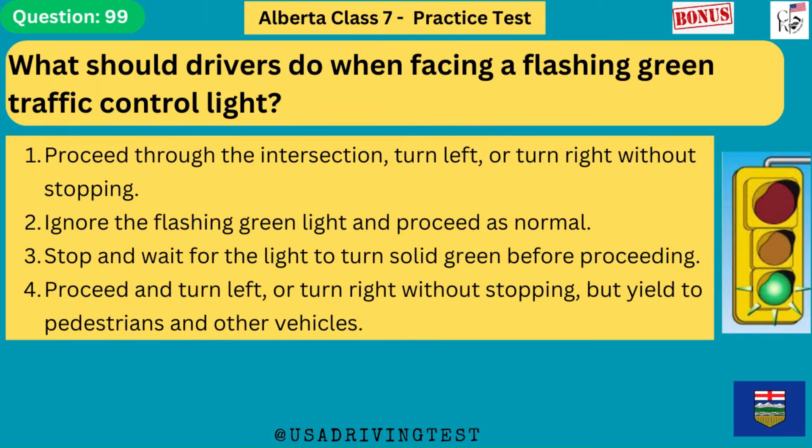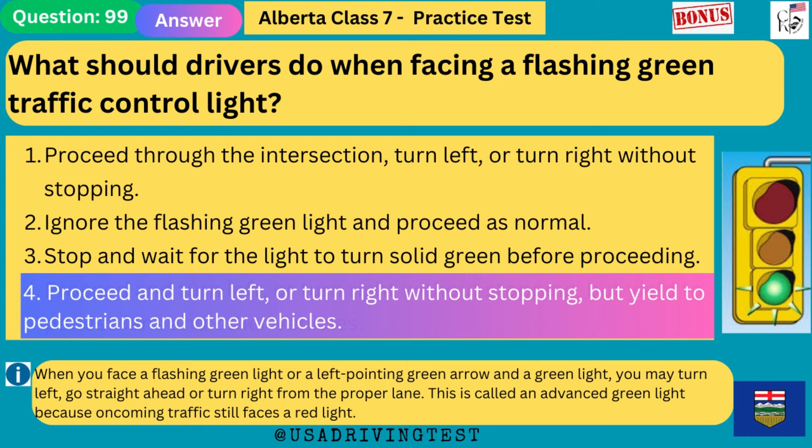What should drivers do when facing a flashing green traffic control light? 1. Proceed through the intersection, turn left, or turn right without stopping. 2. Ignore the flashing green light and proceed as normal. 3. Stop and wait for the light to turn solid green before proceeding. 4. Proceed and turn left or turn right without stopping, but yield to pedestrians and other vehicles. The answer is 4. When you face a flashing green light or a left-pointing green arrow and a green light, you may turn left, go straight ahead or turn right from the proper lane. This is called an advanced green light because oncoming traffic still faces a red light.